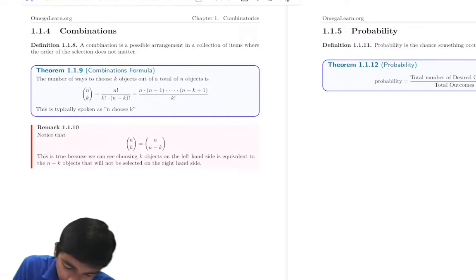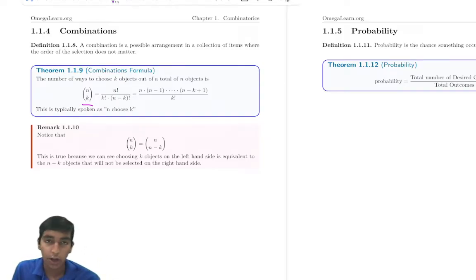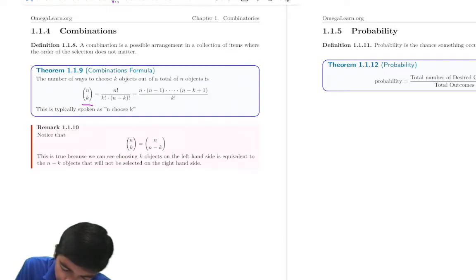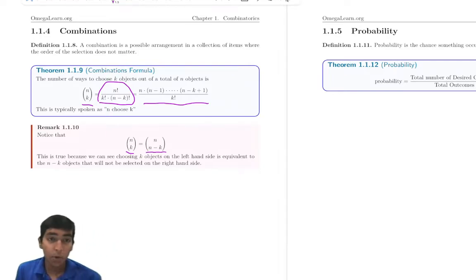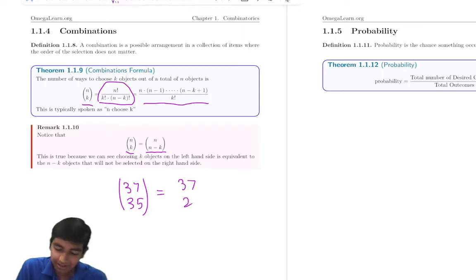So the formula for combinations, n choose k, is n times n minus 1 all the way to n minus k plus 1 over k factorial. Now there's this other form, but it takes much more time, so I recommend you use this version because it's much faster. An important thing to know is that n choose k equals n choose n minus k. This is important because if you end up in an expression like 37 choose 35, rather than having to do this giant multiplication, it's just equal to 37 choose 2, which is easy to evaluate.